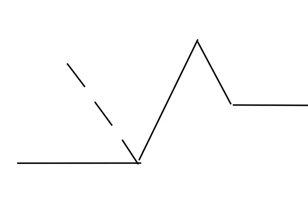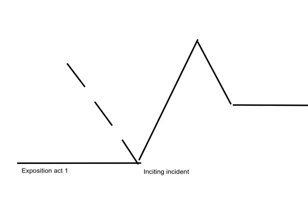We're going to begin with the plot diagram. This is something that you're pretty fully aware of at this point, but reinforcement is always good. The beginning part of our story is known as the exposition, and the exposition is associated with Act 1. The dotted line is what is known as the inciting incident, associated with the end of Act 1. The line going up is what we call the complication, and it's associated with Act 2.